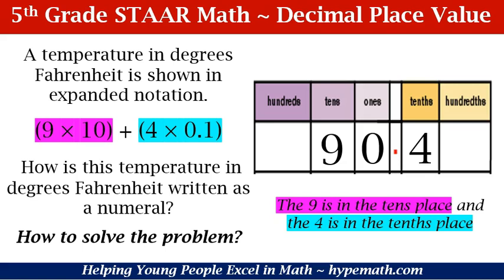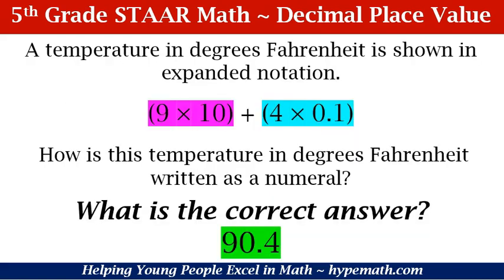You may notice there is a zero in the ones place and ask yourself why. The reason is because in our expanded notation there is no number that we multiplied by the ones place. Since there was no number, we put a zero there — it's a placeholder but the value is zero. So to solve the problem, we entered nine in the tens place, four in the tenths place, and zero in the ones place. The correct answer in numeral form is 90.4.